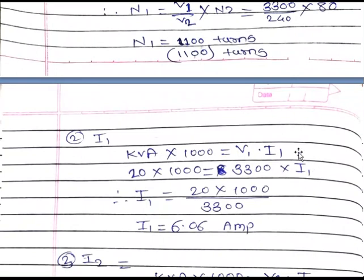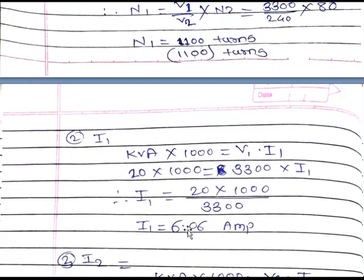Now we calculate the value of I1. We transfer V1 to the left-hand side, so I1 is equal to KVA into 1000 divided by V1. Therefore I1 is equal to 20 into 1000 divided by 3300. The value of primary current I1 is equal to 6.06 amperes.